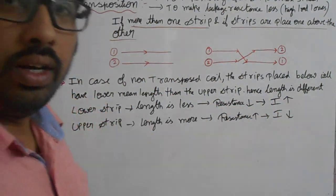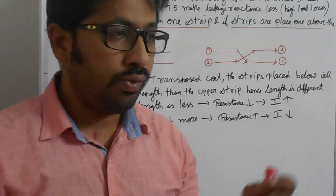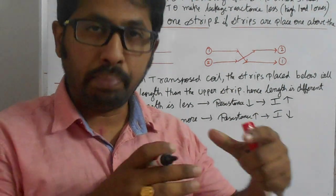Today we are going to learn about transposition. Transposition is done for low voltage winding, that is spiral windings.